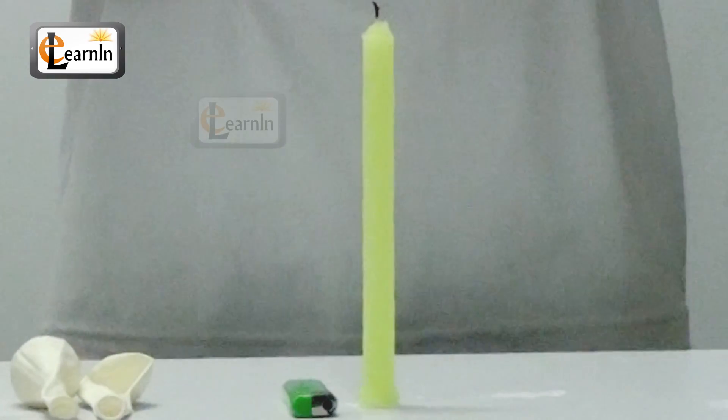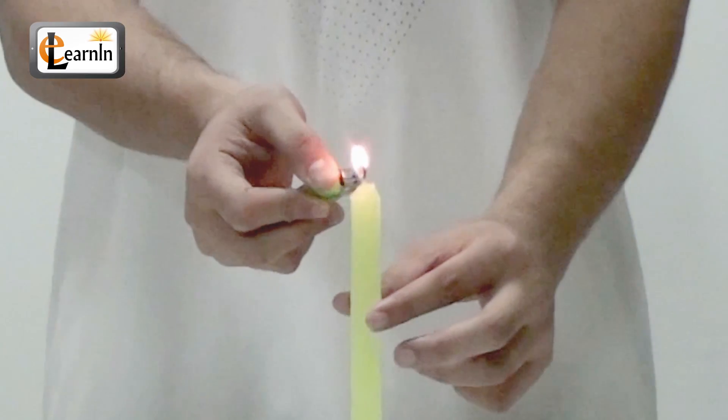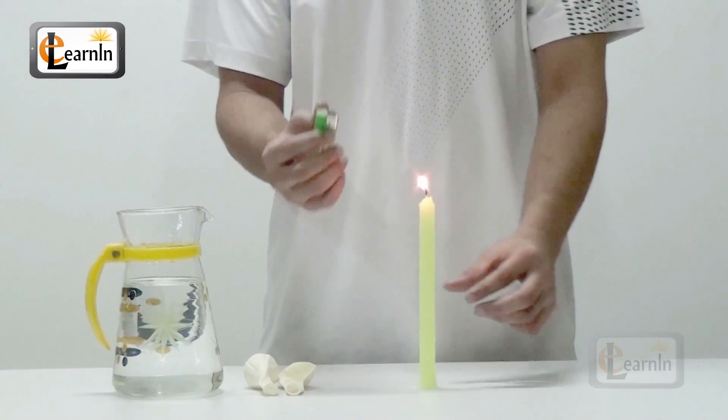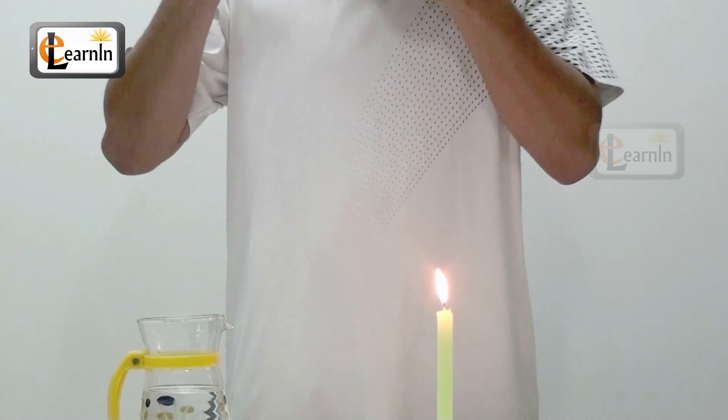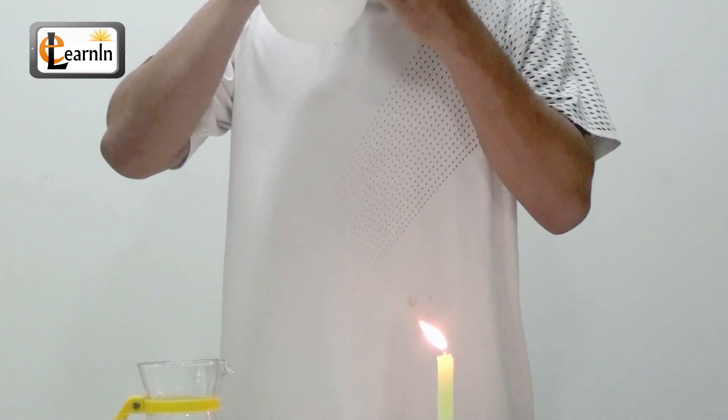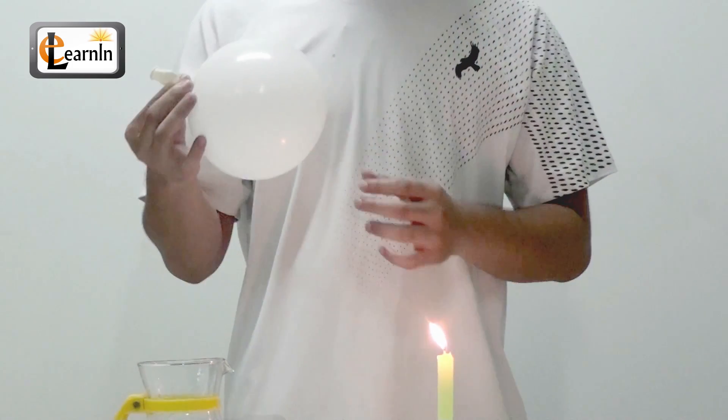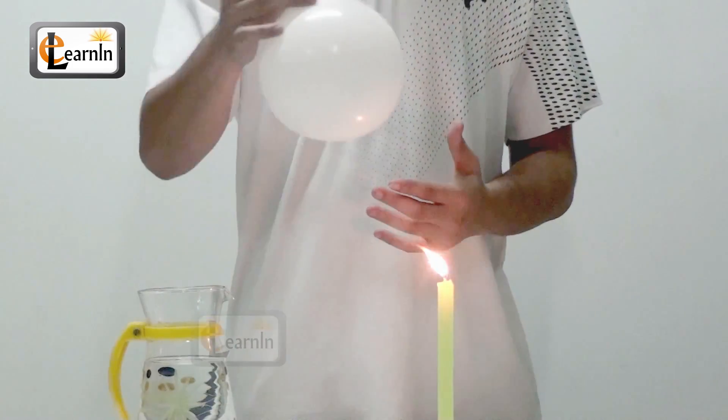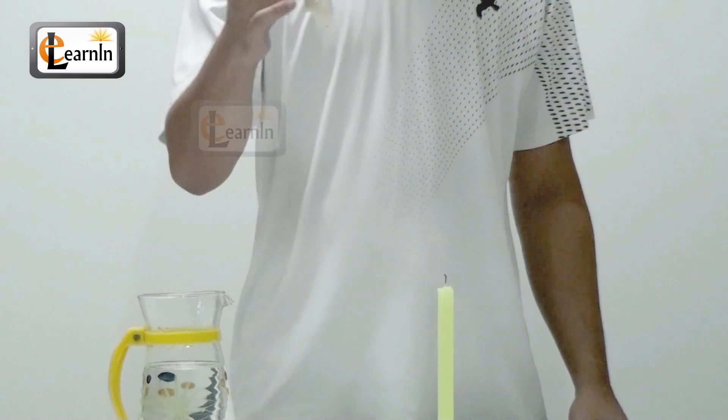The first thing you're going to do is place a candle on a table or any flat surface. Light the candle, now inflate the balloon, slowly lower the belly of the balloon vertically towards the flame of the candle. Well what happens? The balloon explodes in some time.